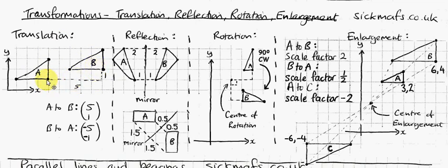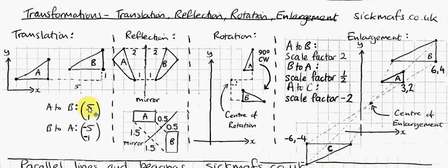So if I translate this corner five across, one up, then translate this corner five across, one up, then connect those corners, I would have translated this shape from here to there. This is the way I write it — from A to B, I'm translating five, one. The horizontal stuff I do first, and the vertical stuff I do afterwards.